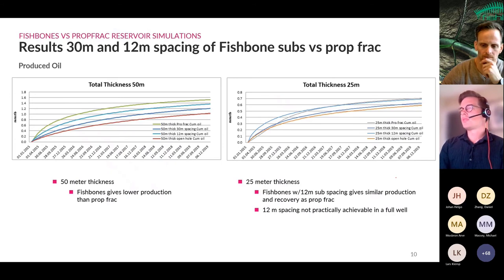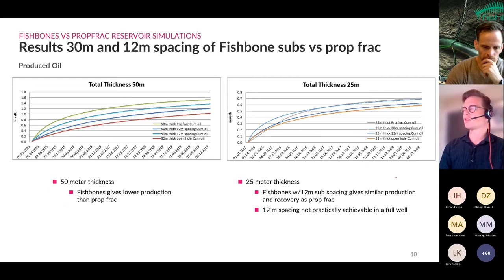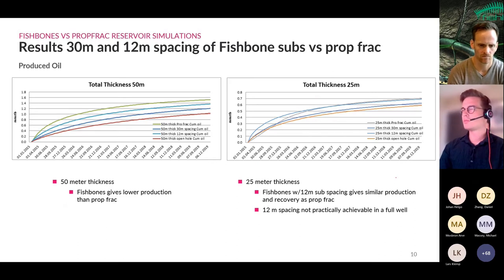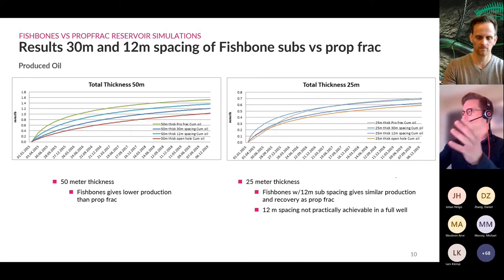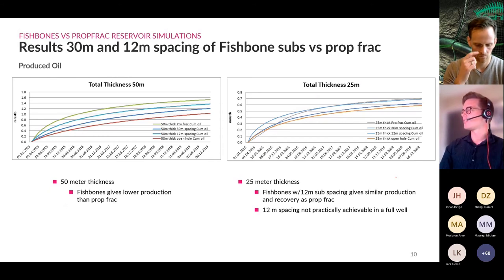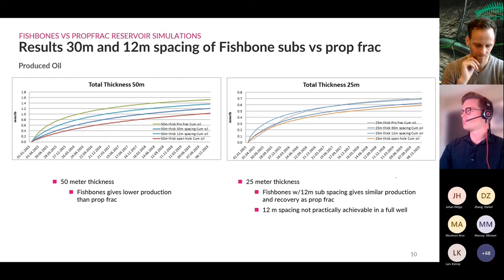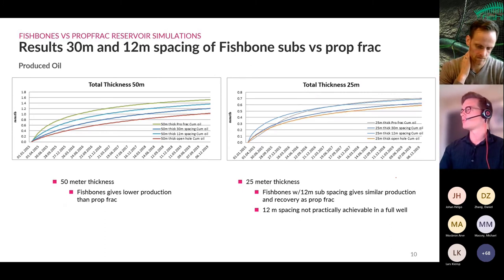From the mechanistic models: in very thick reservoirs, Fishbones struggled to compete with prop-fracking even with closely spaced subs — the prop frack is expected to cover the full pay thickness while Fishbones is constrained to the 12-meter needle length. For the 25-meter reservoir case, Fishbones with 12-meter spacing gives very similar production and recovery as a prop frack. Results were positive enough to progress to a field trial.